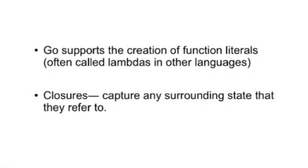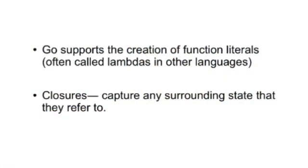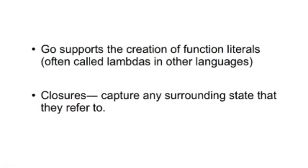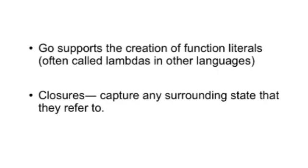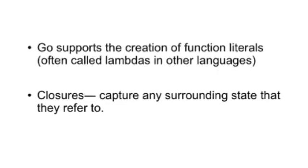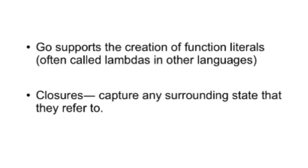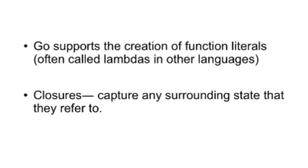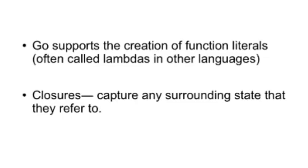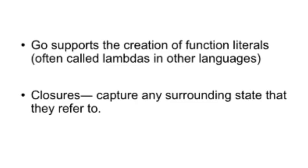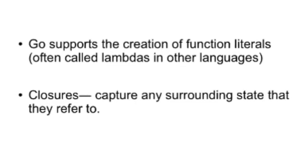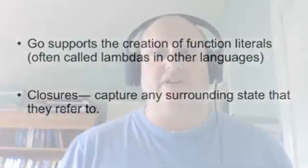In the Go documentation, they're often called function literals, but in other languages, they're called lambdas. Another word that can be used about them is closure, and the reason for that term is when you create a function literal, you use syntax almost identical to creating a normal function.